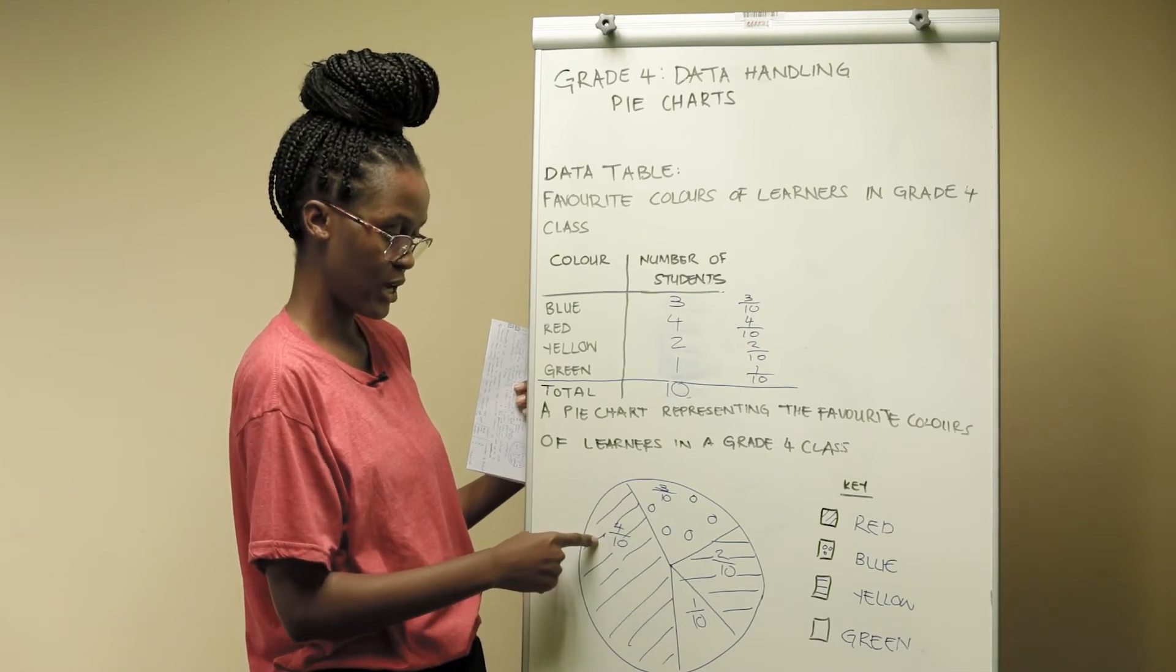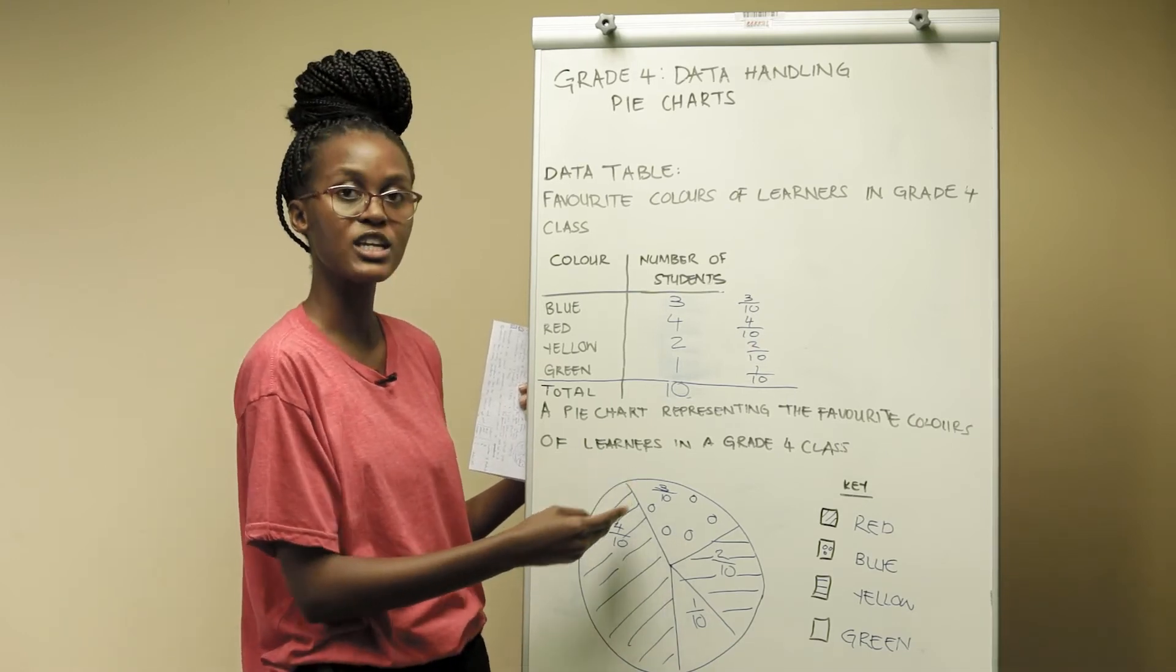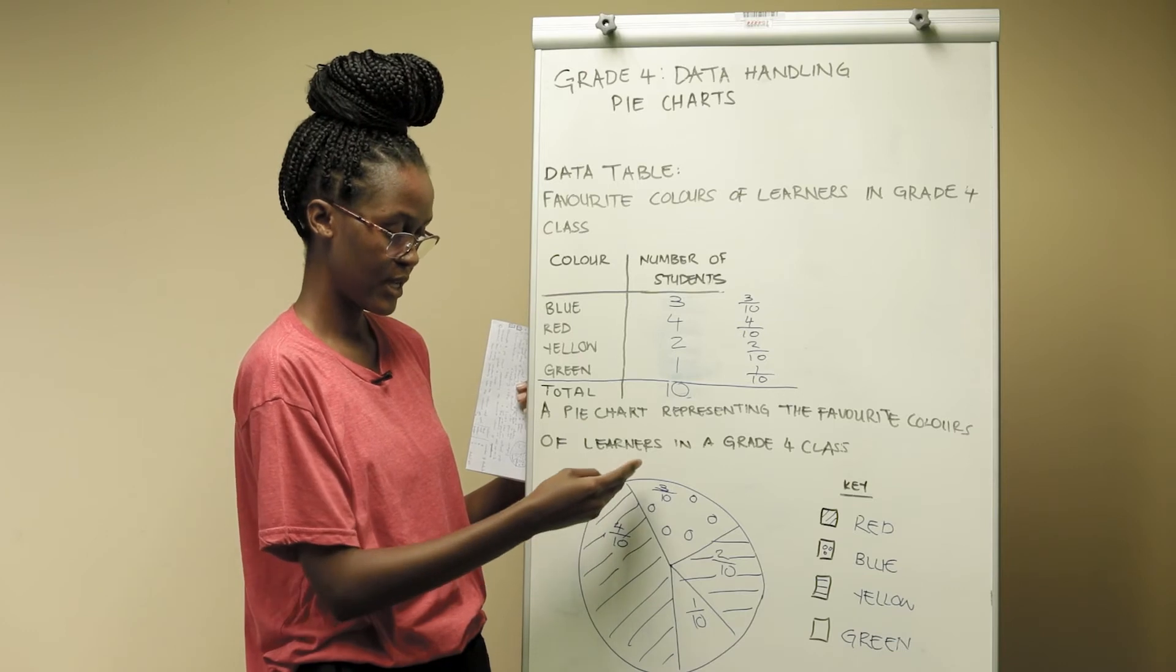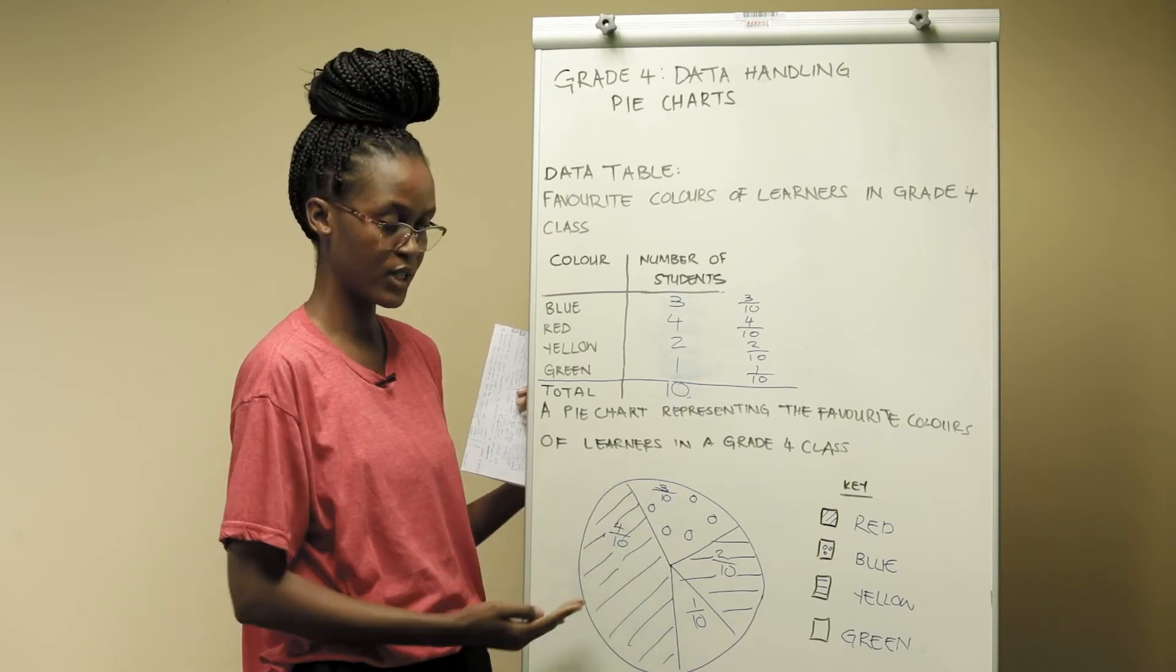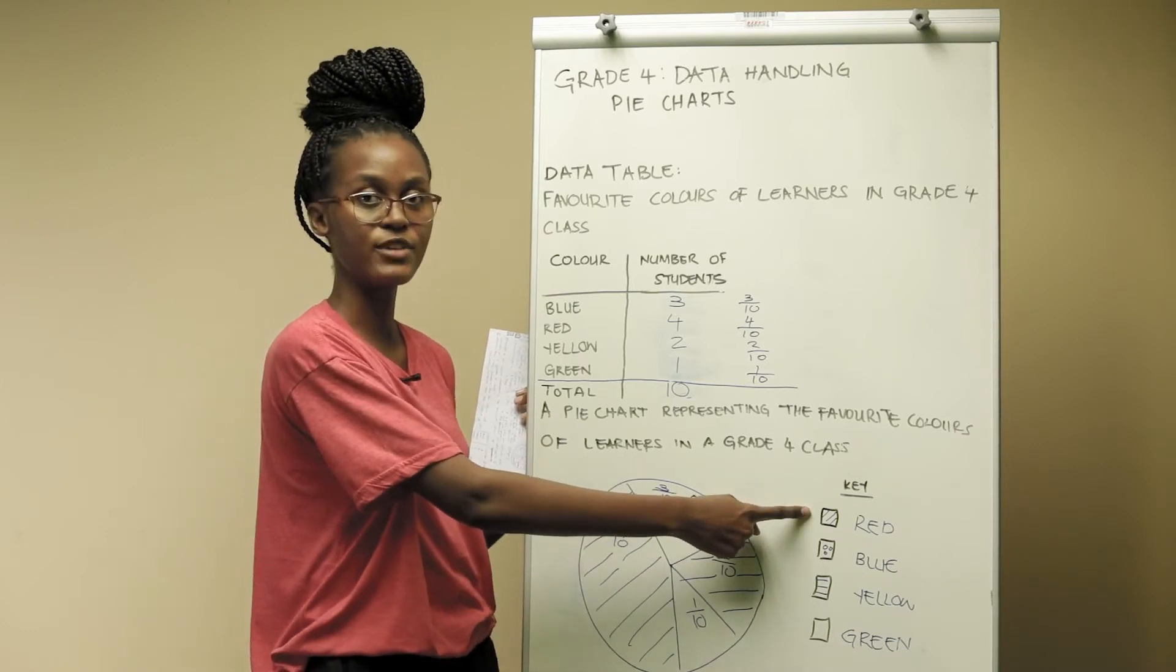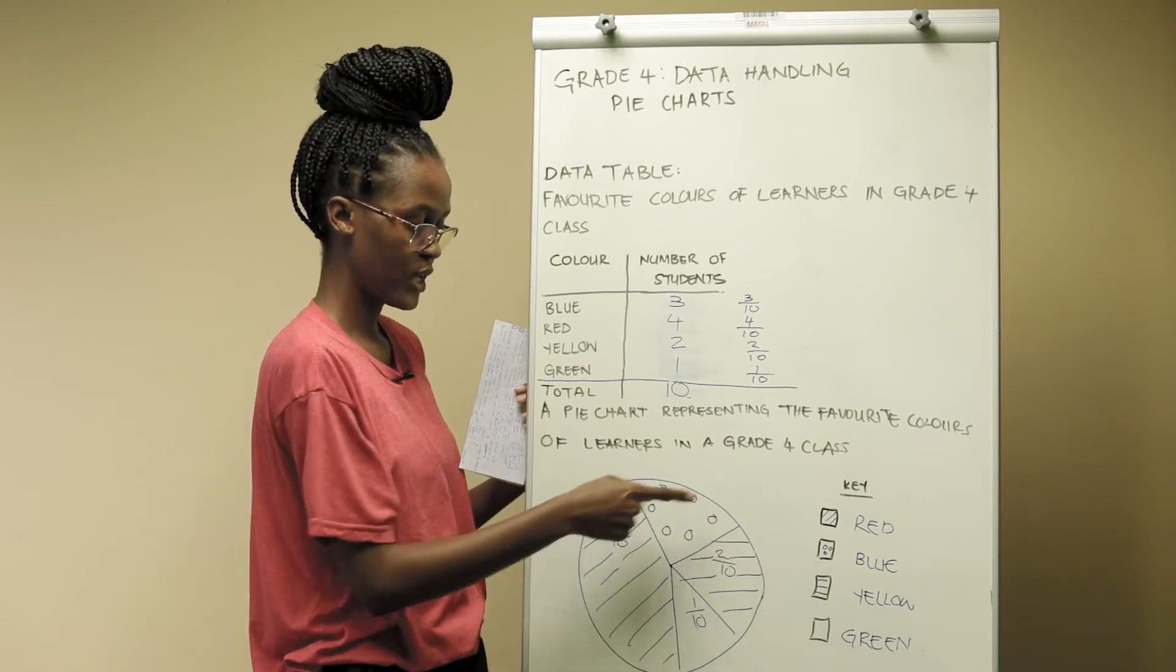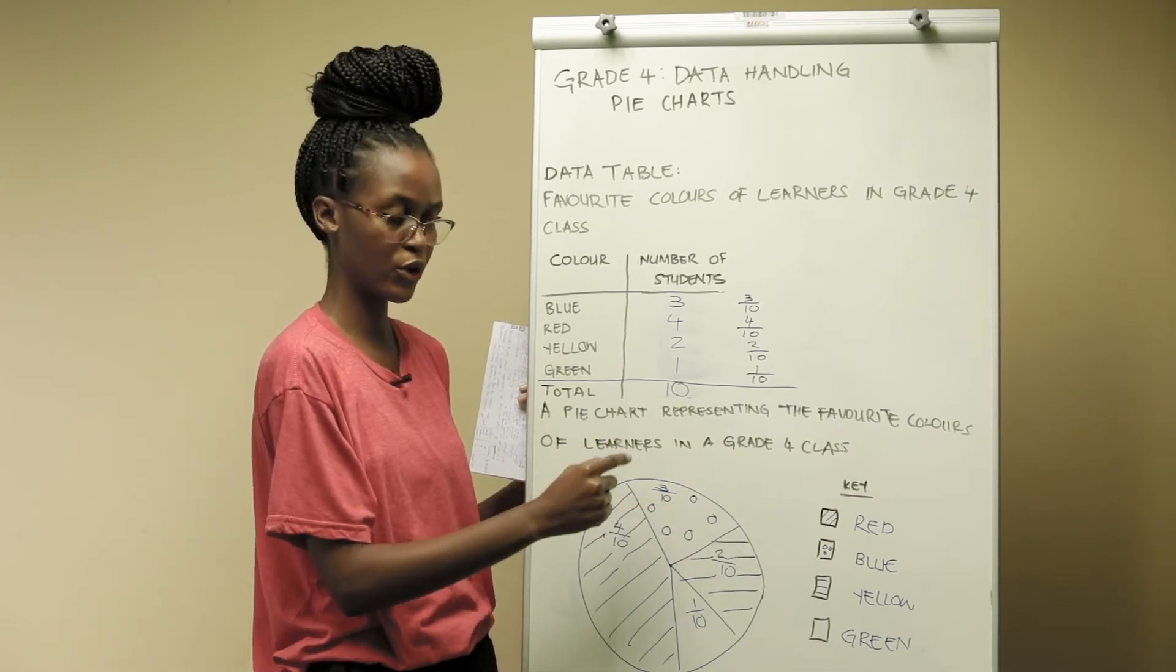For example if we take red it is illustrated using lines going downwards. That's what we have in our key. Another example, blue. It is illustrated using circles.